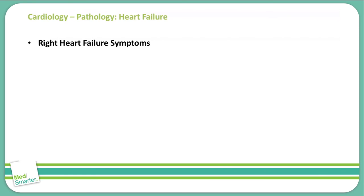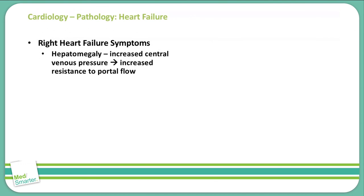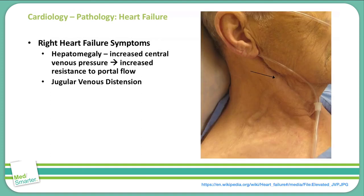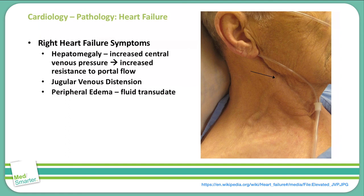Right heart failure symptoms include hepatomegaly — because the right heart is backing up, we have an increase in central venous pressure, which leads to increased resistance in the portal flow. We can also see jugular venous distension, visible as veins popping out of the neck, due to a decrease in the amount of blood that can return to the right side of the heart. Finally, we can see peripheral edema, which is transudative fluid settling in the peripheral vascular system, specifically in the gravity-dependent areas of the body.